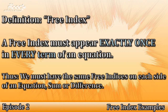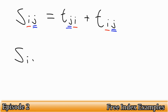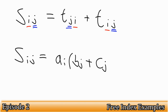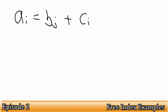Let's have a look at some examples. Which of these have free indices, and which make no sense in terms of what we've learnt about summation conventions so far? S_ij = t_ji + t_ij — this is fine, as both i and j appear exactly once in every term. S_ij = a_i(b_j + c_j) — this is also fine. We expand the brackets to get a_i*b_j + a_i*c_j. Now consider: a_i = b_j + c_i — this makes no sense, as i doesn't appear in tensor b, and j doesn't appear in tensors a and c.